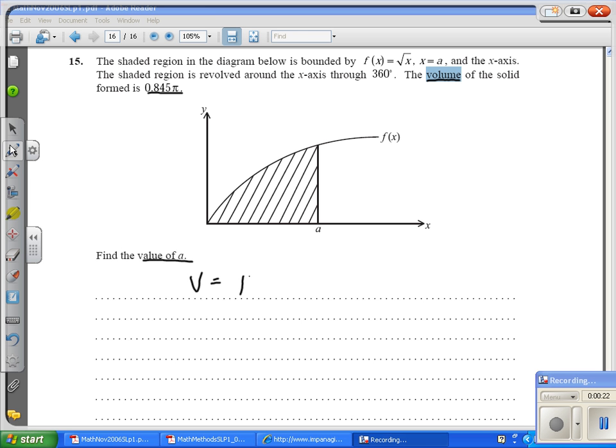So it follows this equation. Volume in general we know is equal to π integral from 0 to A. In this case, it's f(x) whole squared. That is generally the formula. So now we have V equal to π integral from 0 to A of root x squared dx.